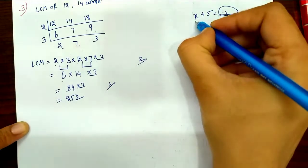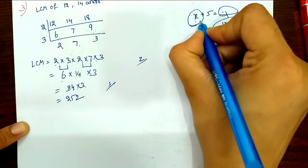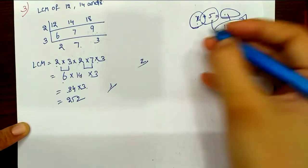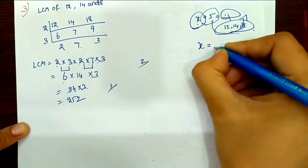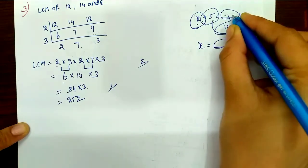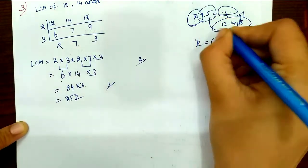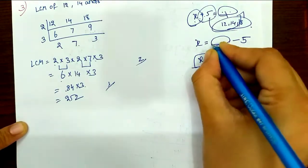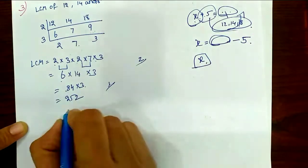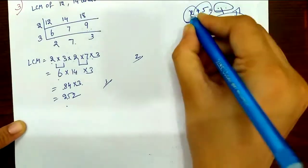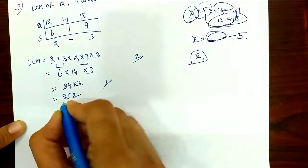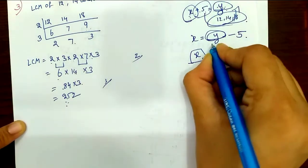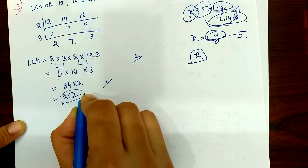So the LCM is 252 (that is y = 252). We let x be the unknown number. The logic is: x plus 5 equals 252, so x = 252 minus 5.